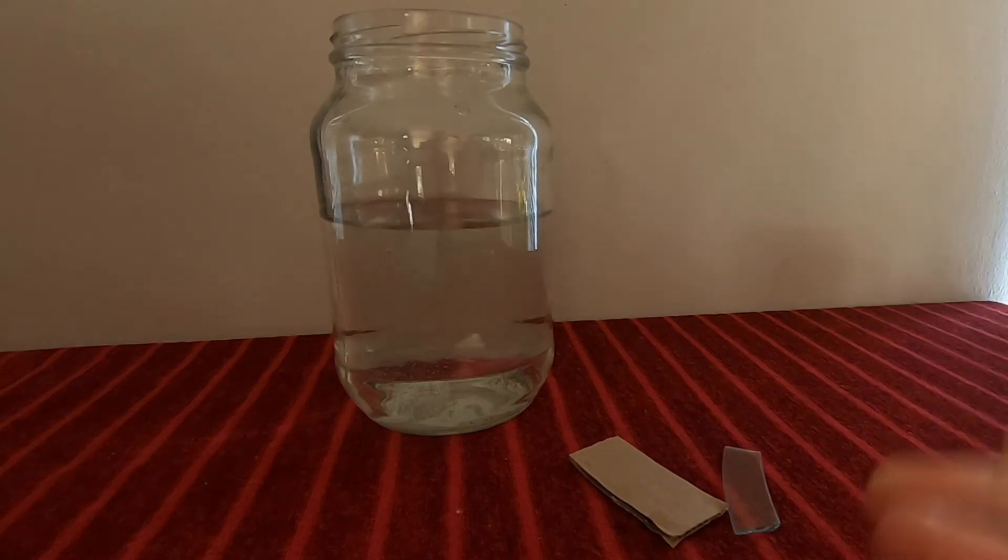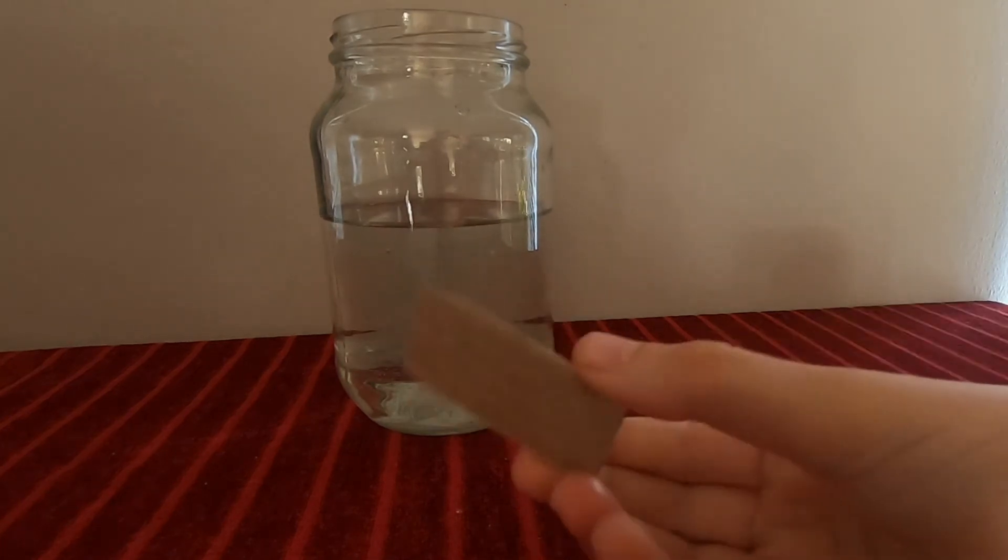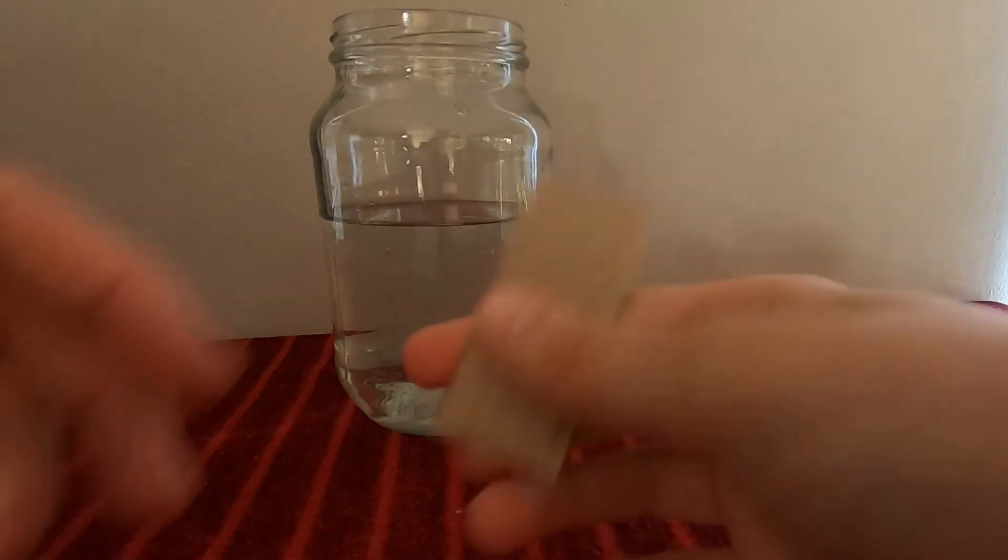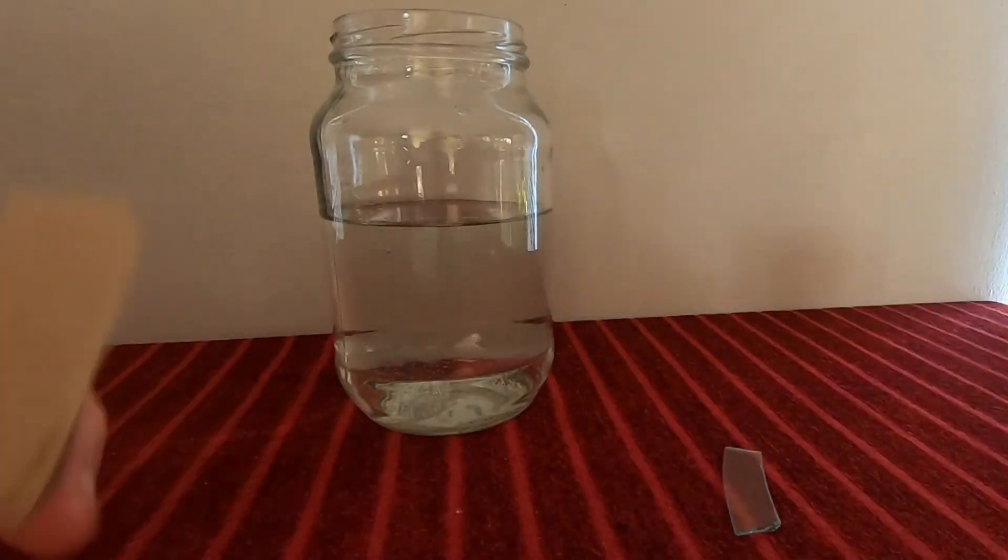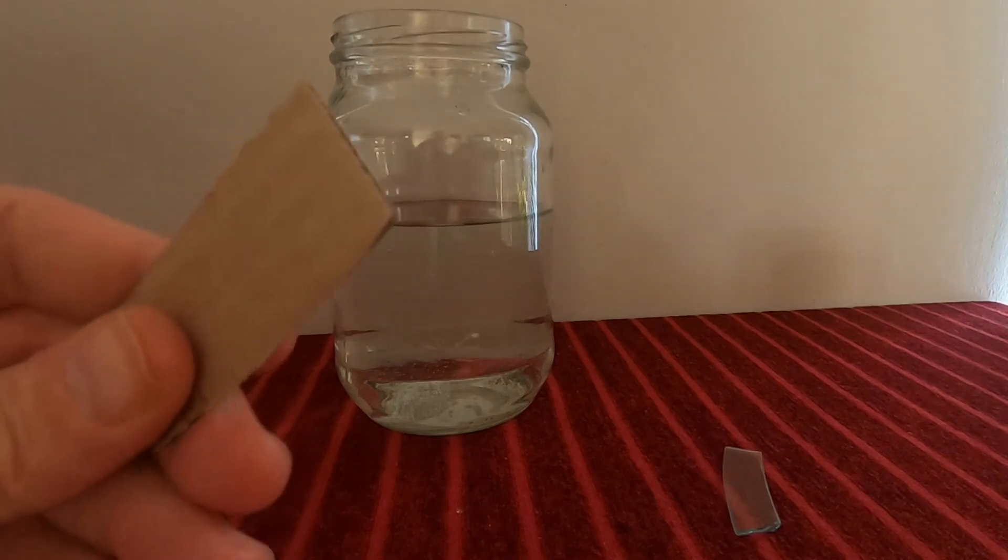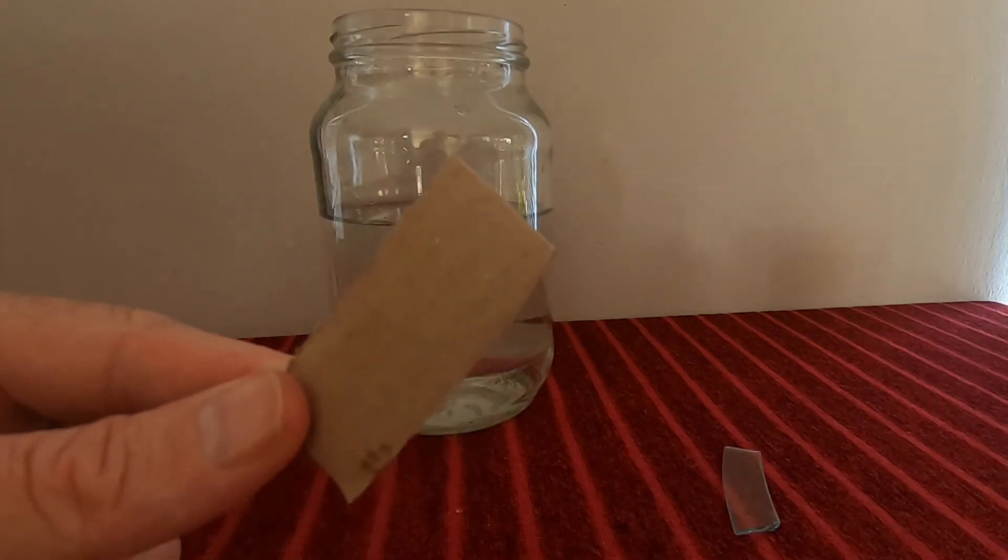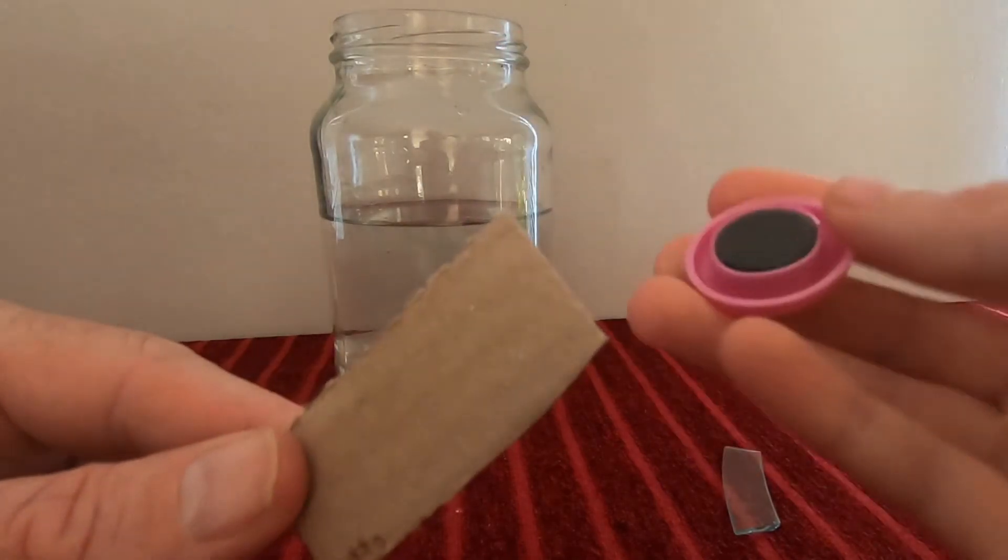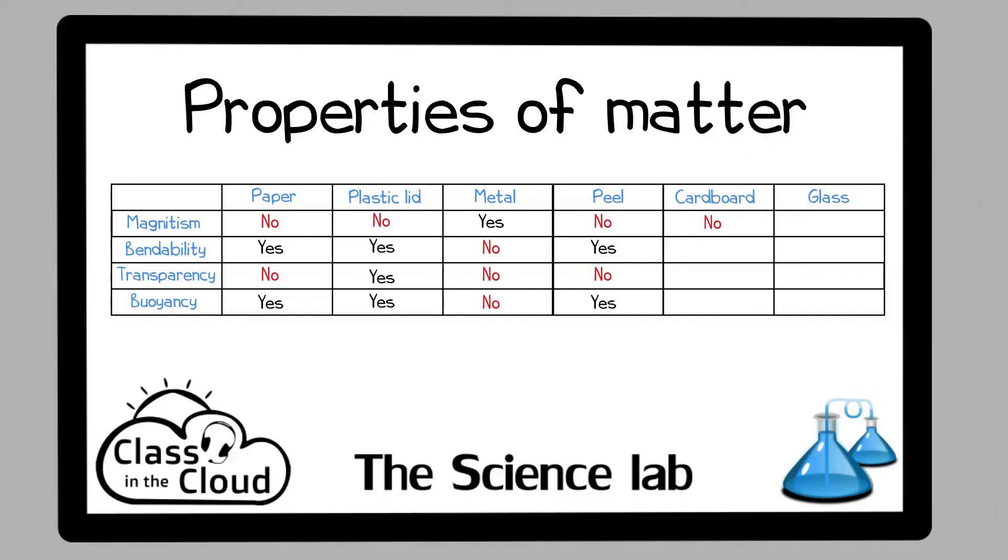We only have two more objects to test. The first one we're going to do is cardboard. I hope you guys are enjoying yourselves here with us. So let's see if this piece of cardboard is magnetic. Oh, I have a big concern as always. Nope, not magnetic. Definitely not.